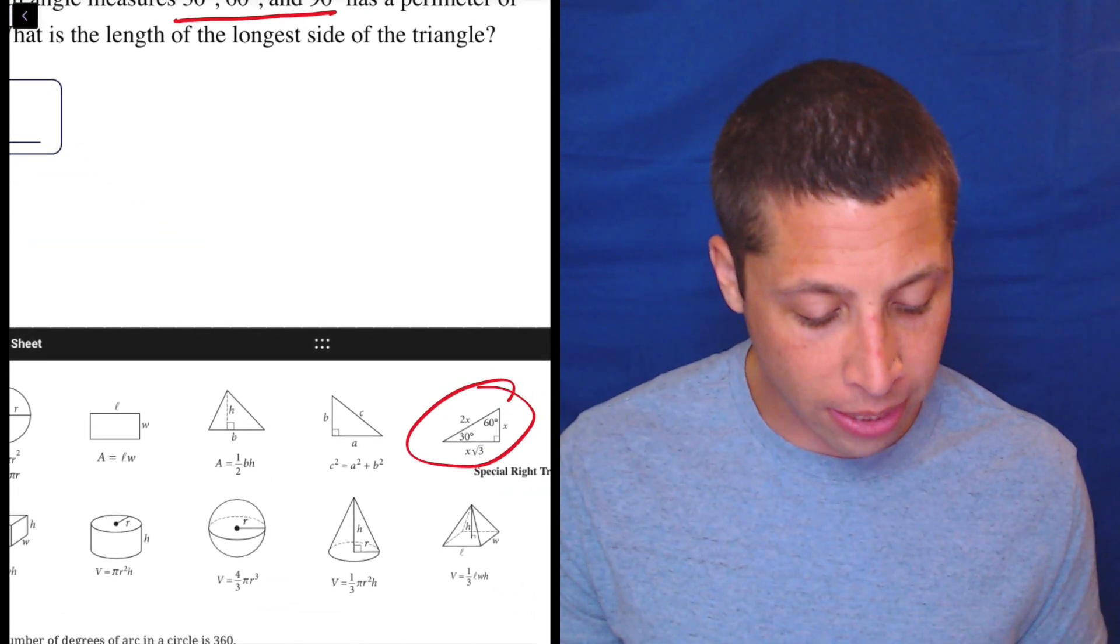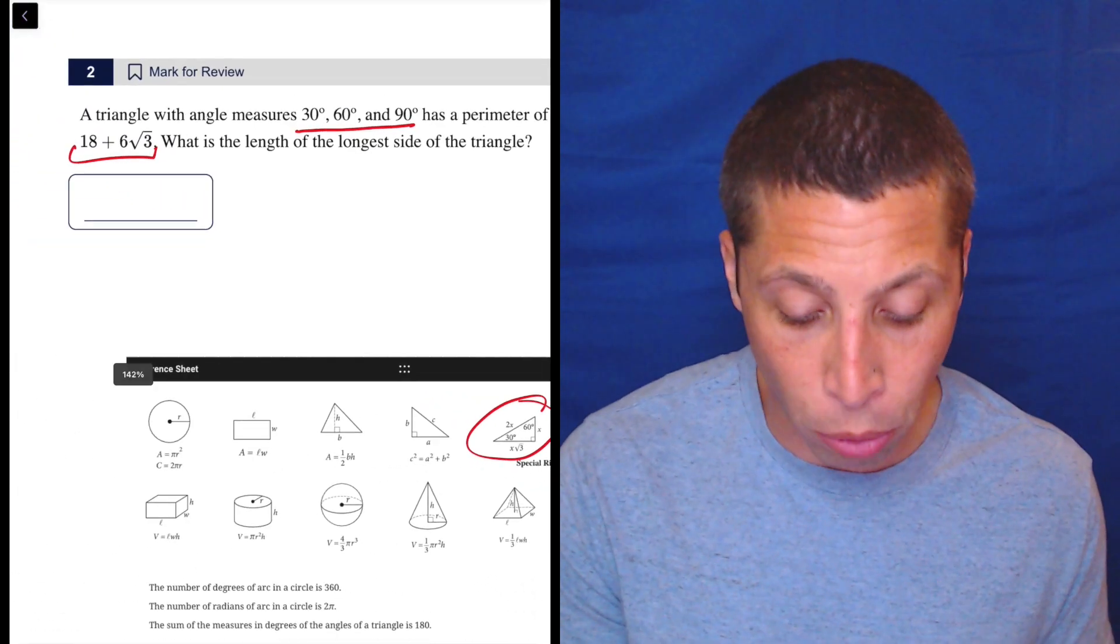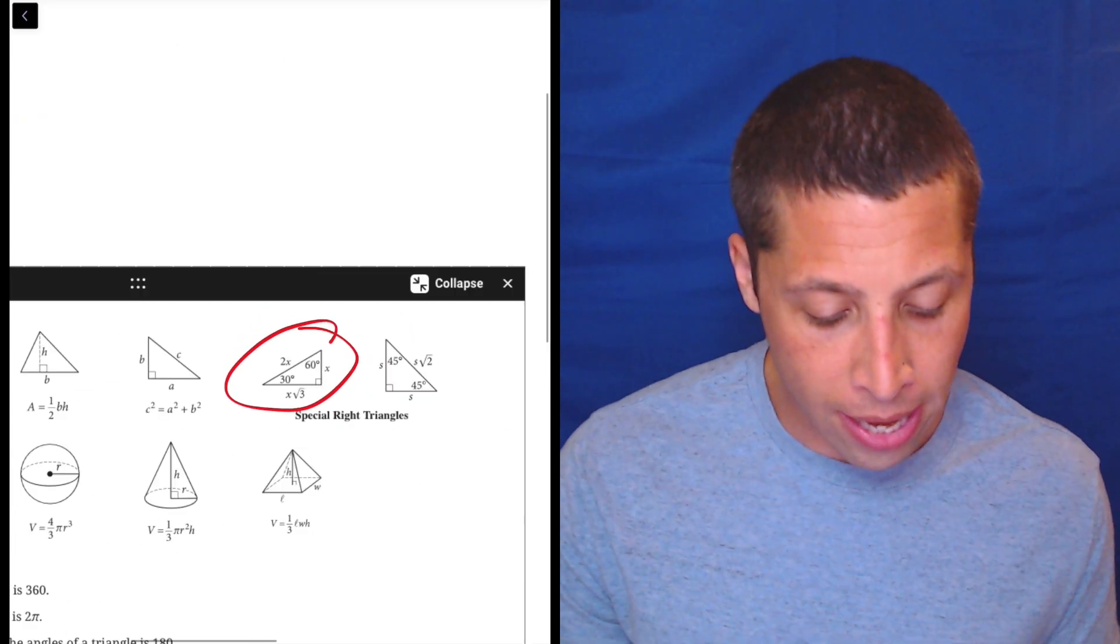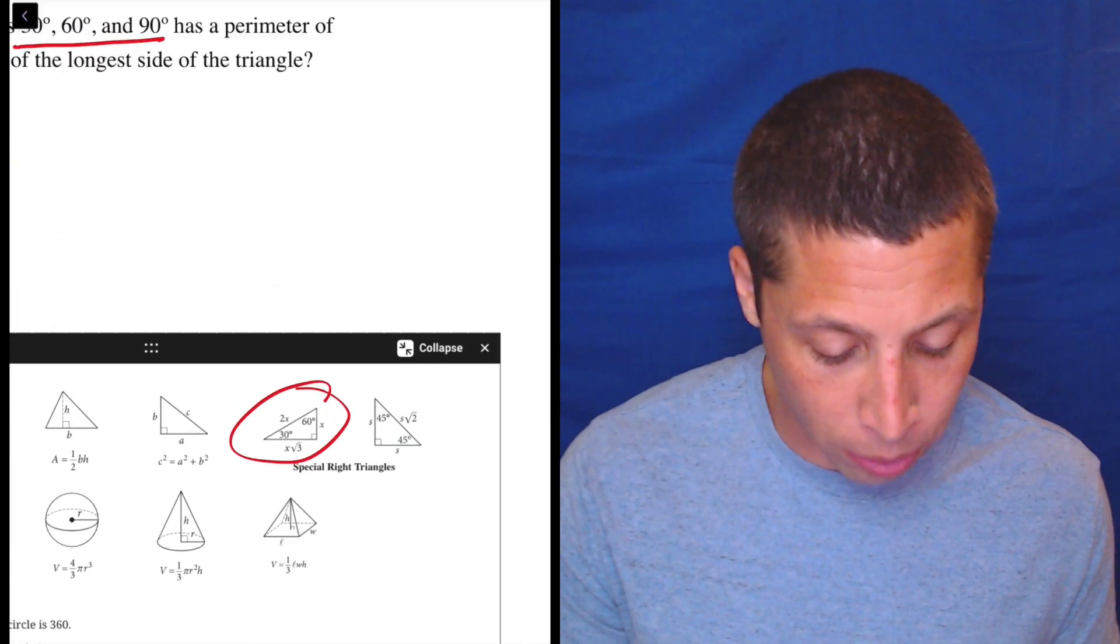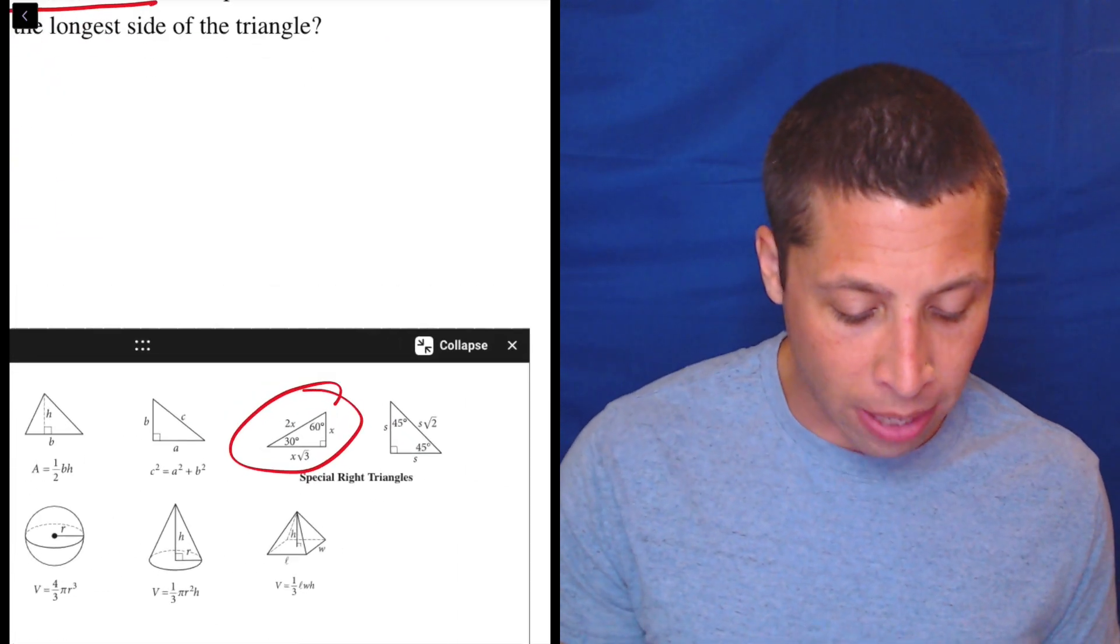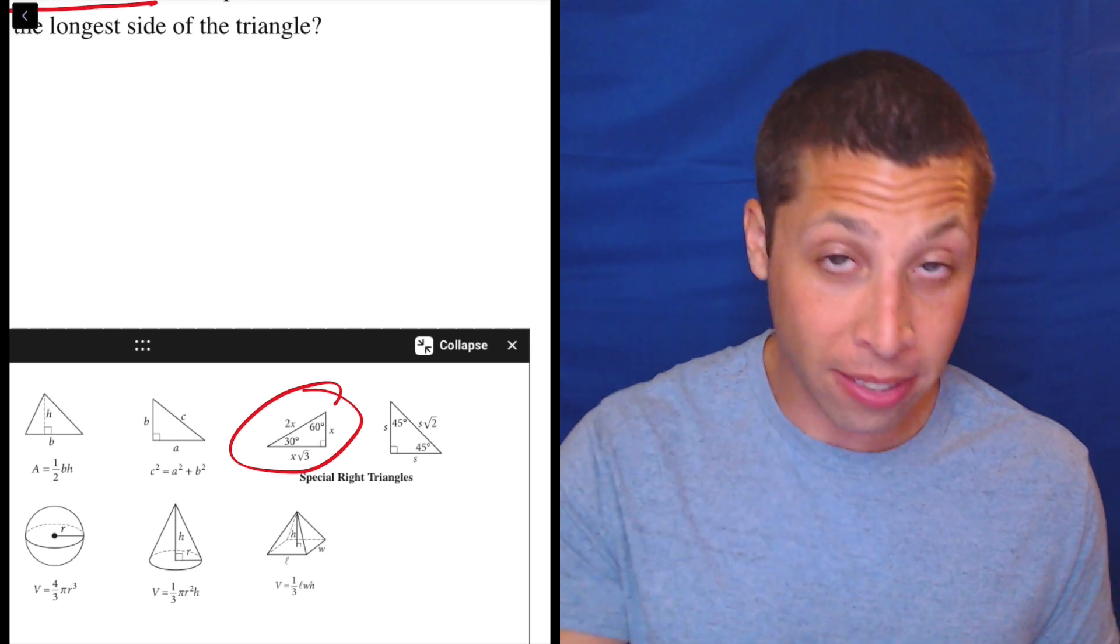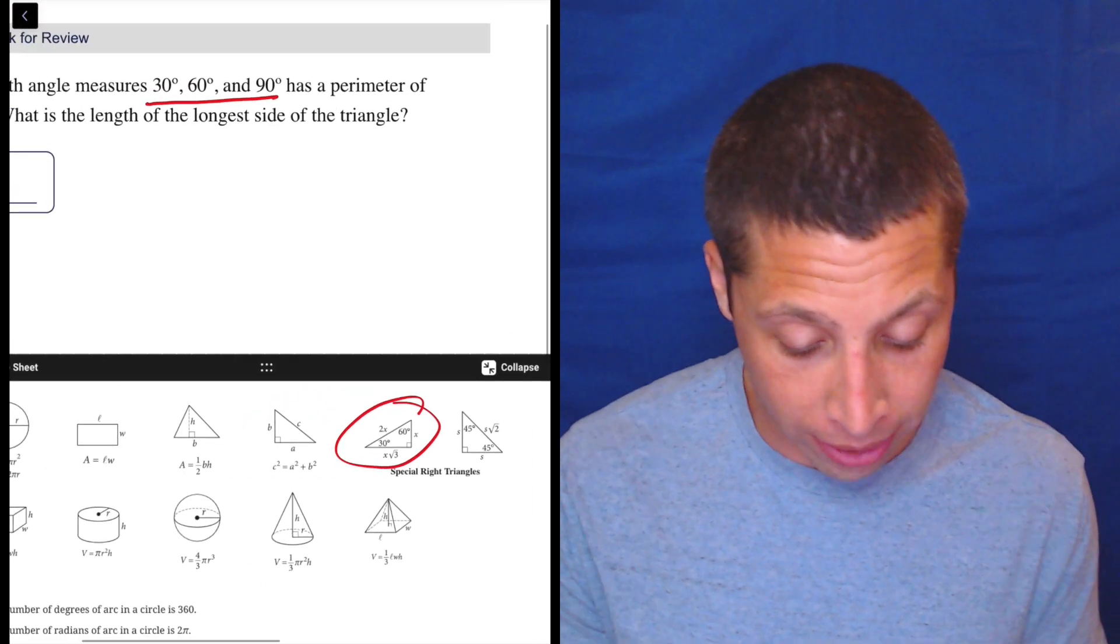So let's think of it like this. They're telling us the perimeter of this thing is 18, what is it, plus 6 root 3. So let's add all these up. That means we're going to have the 2x plus the x plus the x root 3. So let's write that.